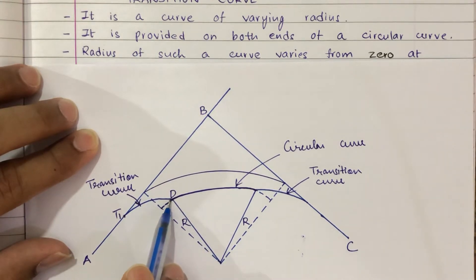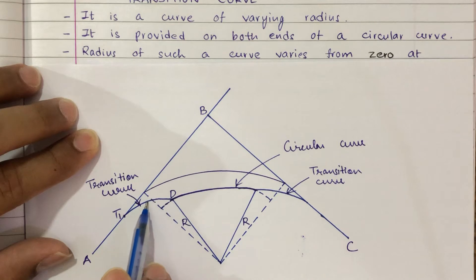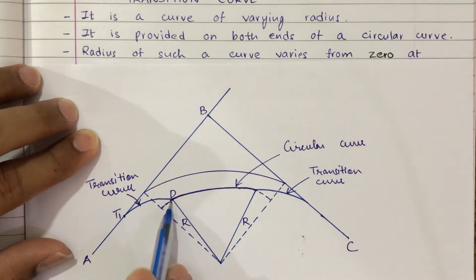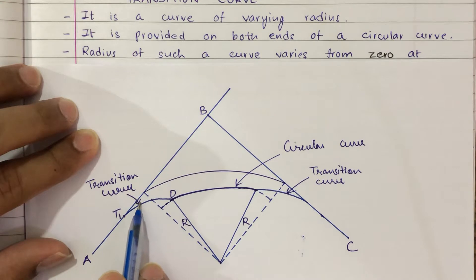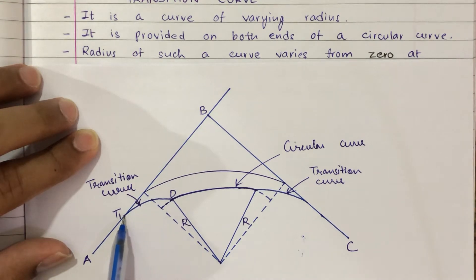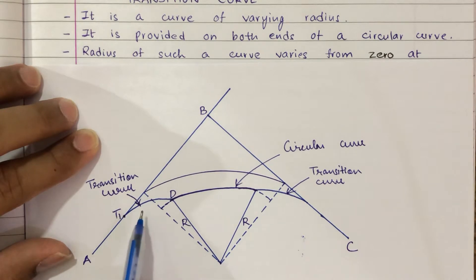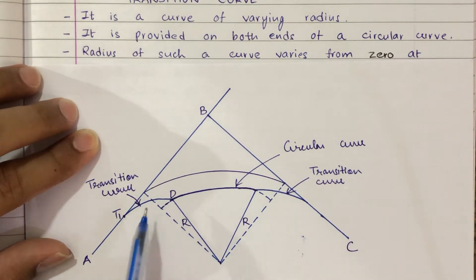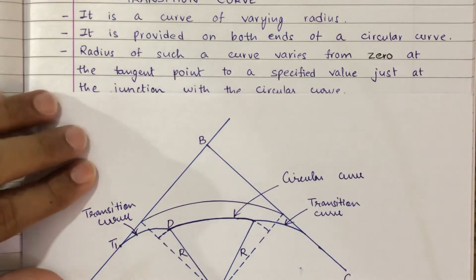As we move away from junction D, the radius will keep on changing. And at tangent point T1, the radius will become 0.